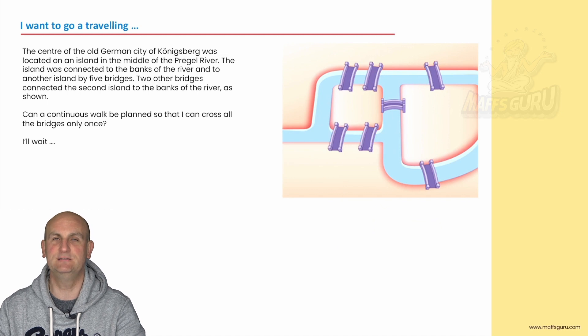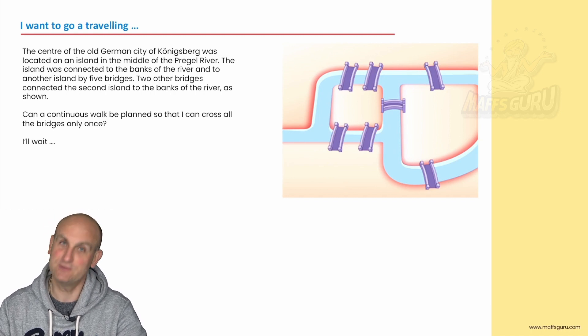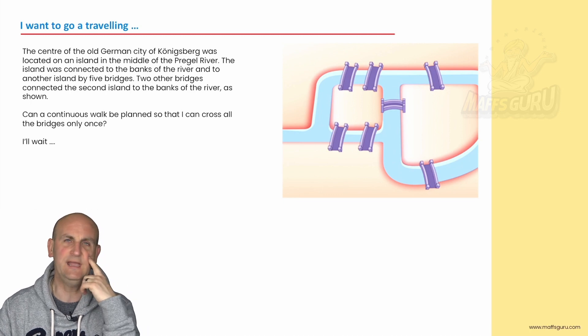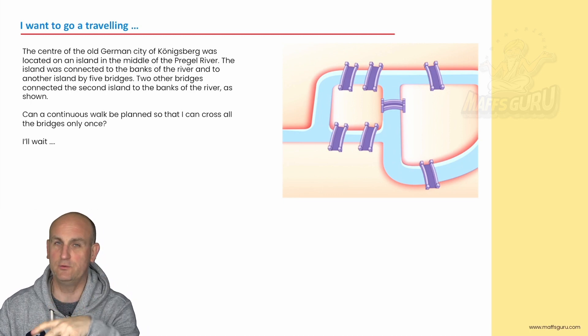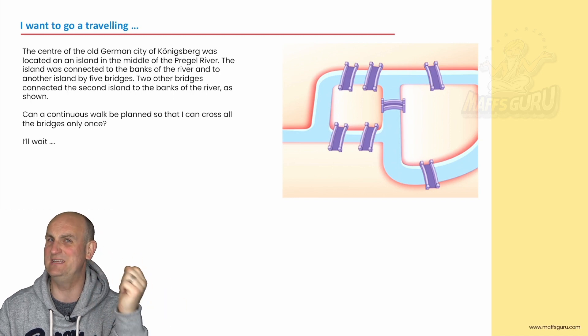Well there's this amazing dude called Euler, come to me in a moment, who basically was sitting one day having his cup of coffee in this German city of Königsberg. Sorry if I mispronounce that. And basically he was like hmm can I get from this island to all the other islands over the five six seven bridges I can see.